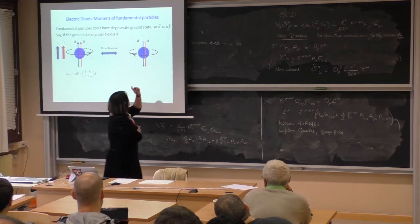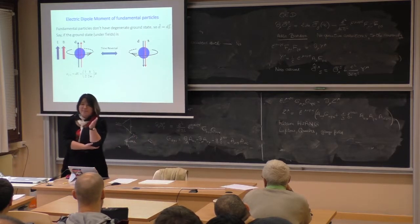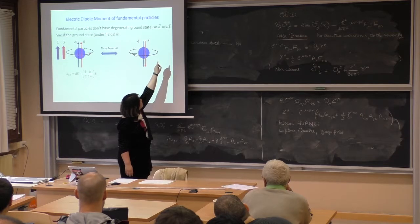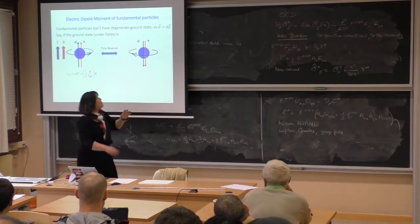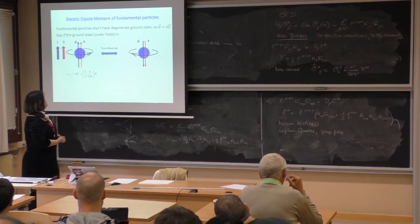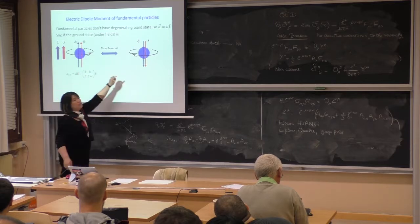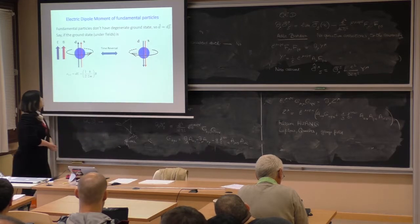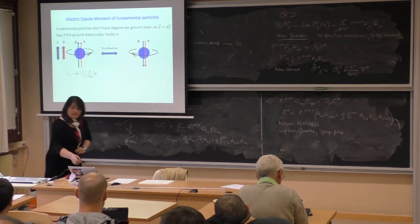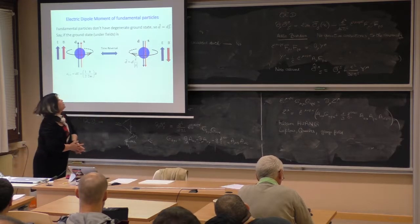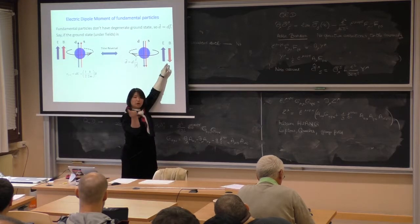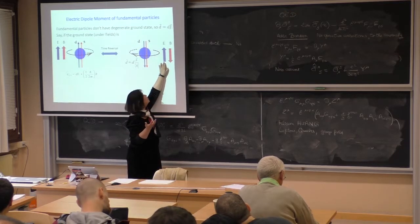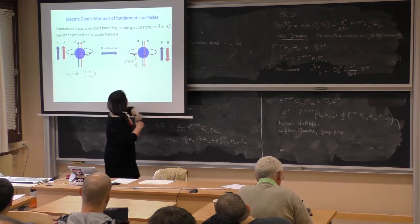Because the EDM has to follow the spin — the EDM can only take the direction of the spin, so EDM has to be proportional to the angular momentum J with some scalar factor. That's the size of the EDM. So on time reversal, not only does the spin reverse direction, EDM also reverses direction for a fundamental particle.